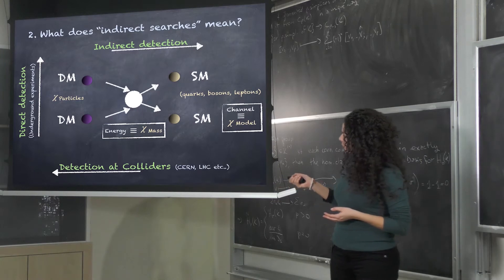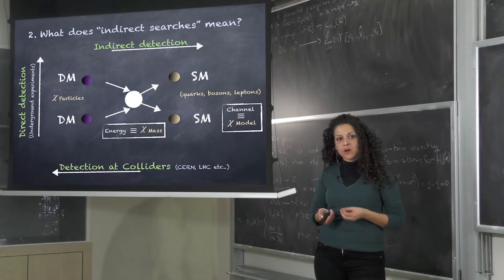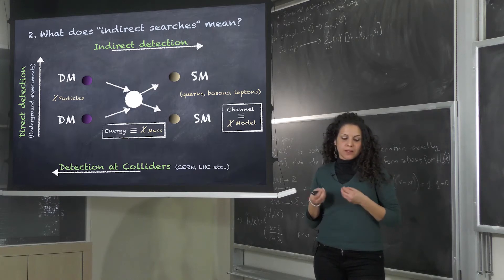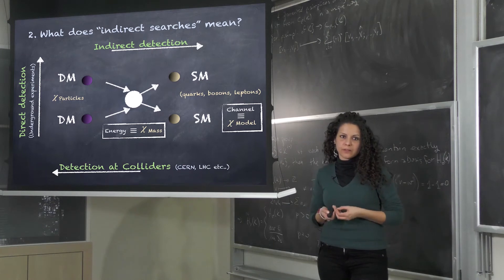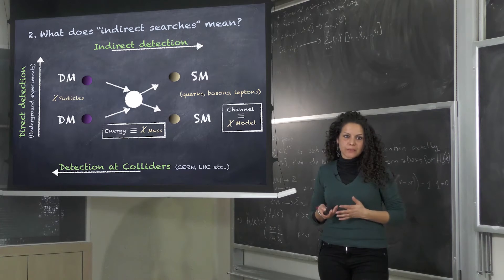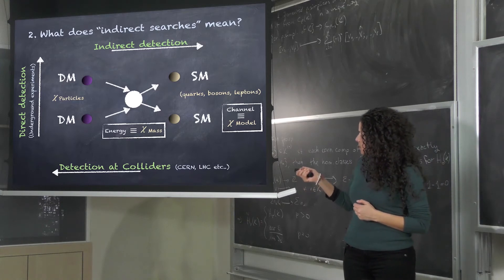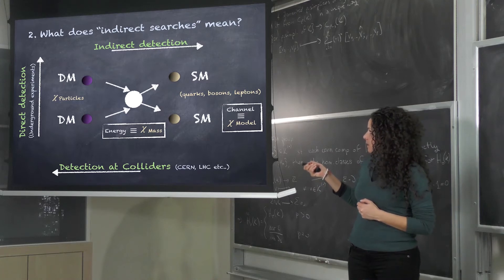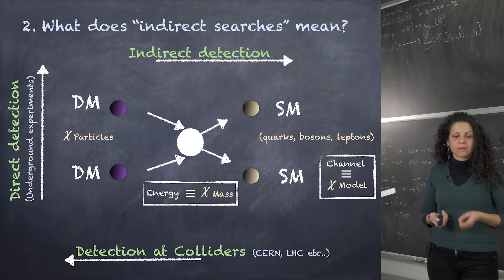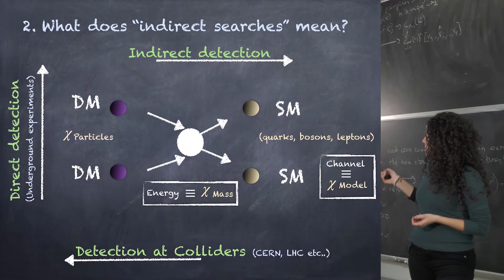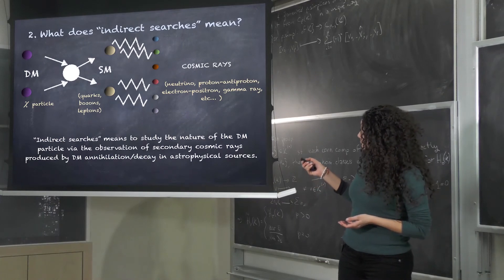In the case of direct detection, we try to determine the recoil energy of the dark matter particle interacting with a heavy nucleus that is the instrument itself. Direct detection experiments are made underground in order to reject the main background. For indirect detection, we have two dark matter particles that can annihilate and generate standard model particles. The energy of this event gives us information about the mass of the dark matter particle, while the annihilation channel tells us about the particle physics model explaining dark matter.